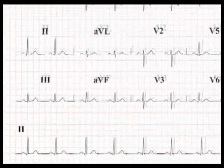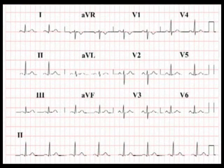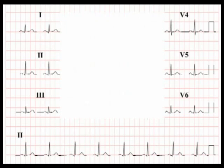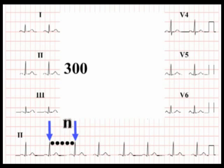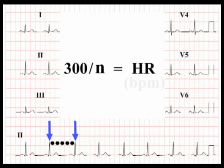Generalising, we have found a simple method for calculating heart rate from an ECG. Identify 2 R waves on the rhythm strip, count the number of large squares between them, then take this number and divide it into 300. Provided the heart rhythm is regular, this method gives you an accurate heart rate in beats per minute.